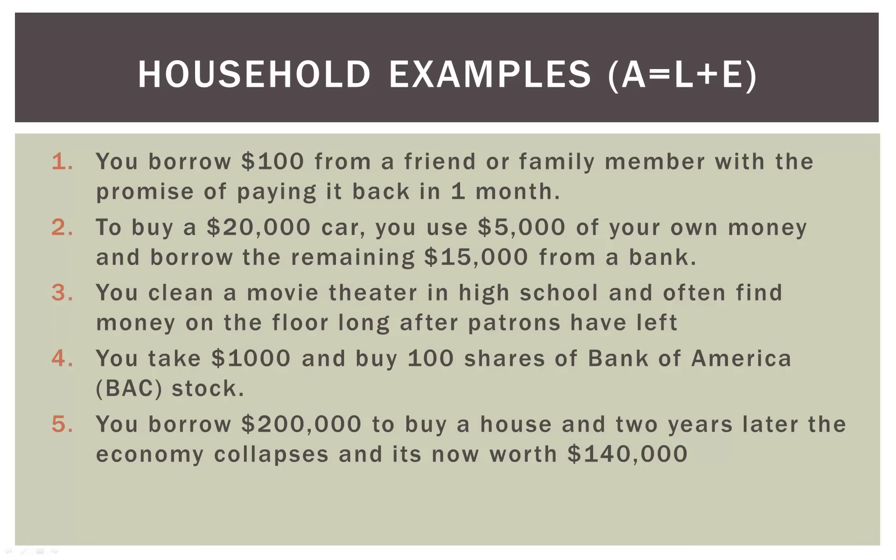Number four: you take $1,000 of your own money and buy 100 shares of Bank of America at around $10 a share. This one is a bit different because we're only working on one side of the equation. We're taking $1,000 cash of our own assets and transferring that into 100 shares of Bank of America stock — a $1,000 cash asset turned into 100 shares of stock assets. We don't do anything on the right-hand side of the equation.